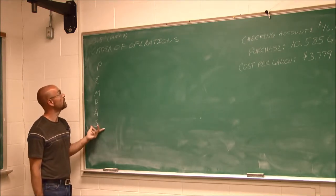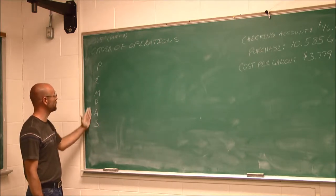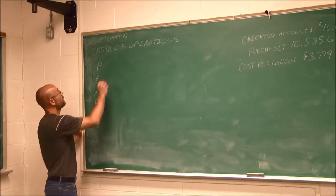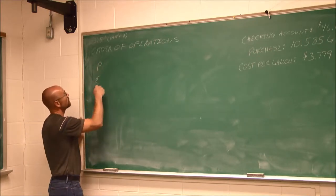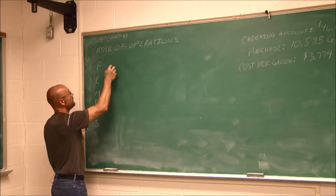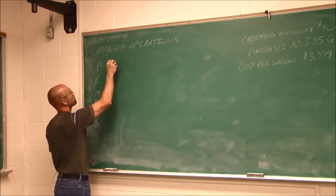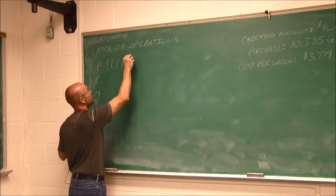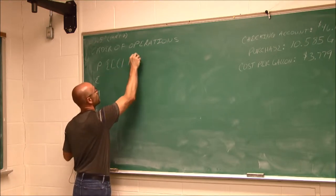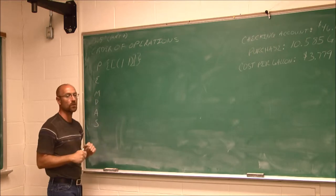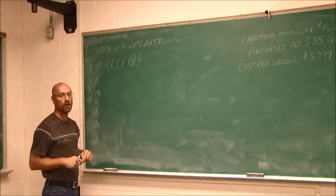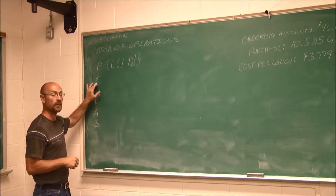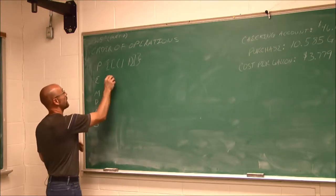Let's review order of operations. We have this mnemonic device, please excuse my dear Aunt Sally. The PE stands for parentheses, and that's any type of grouping symbol, whether it's braces or brackets or parentheses or even that special absolute value. If something's in any sort of grouping symbol, we're going to draw our attention to that first. Then the E stands for exponents.